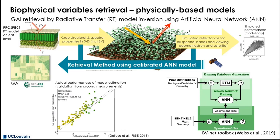For the leaf level, the PROSPECT radiative transfer model is the most popular one, which is used in the BVNet toolbox that we will introduce here.